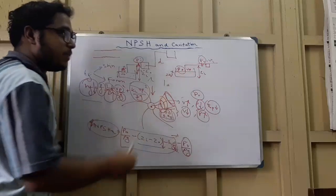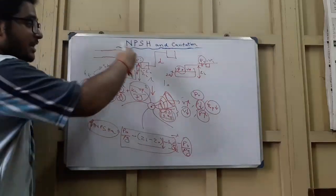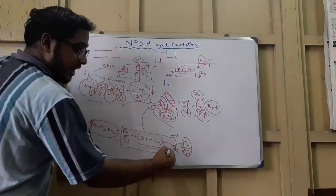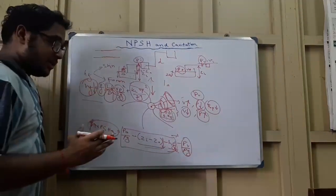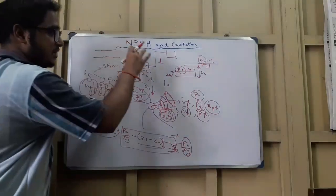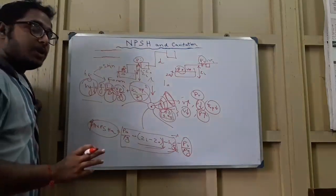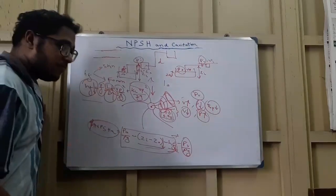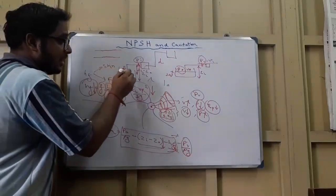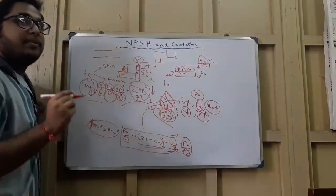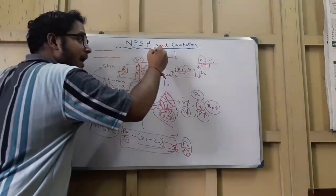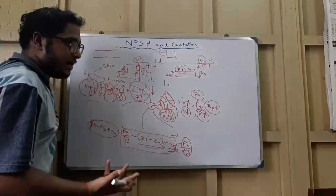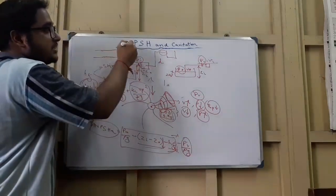So to summarize: we must reduce the losses the liquid suffers before it reaches the pump in the suction line, so that it does not lose too much energy and become vapor as it enters the pump. We keep pressure energy as high as possible by: keeping the reservoir as close to the pump as possible, keeping the minimum number of fittings, valves and bends in the suction line, and maintaining a higher diameter suction line than discharge line.